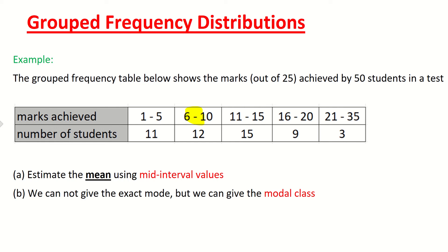So we can see here for instance 12 students got between 6 and 10 marks. Now perhaps all 12 of those students got 6 marks. Maybe all 12 of them got 9 marks. We just don't know.